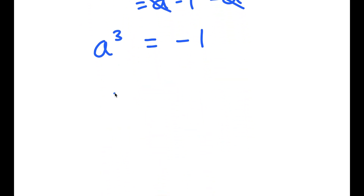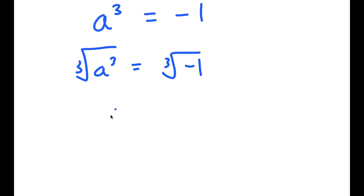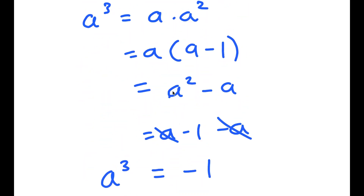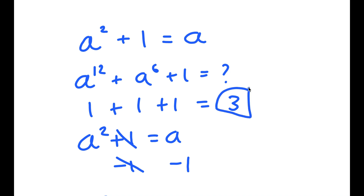Taking the cube root on both sides gives a is equal to negative 1. Plugging this into a to the power of 12 plus a to the power of 6 plus 1: negative 1 to the power of 12 is 1, plus 1, plus 1, which equals 3. So 3 is my solution.